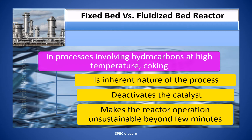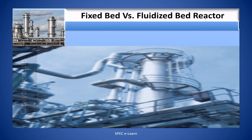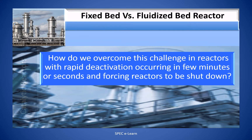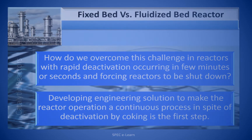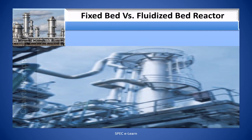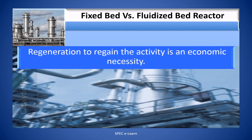When catalyst activity is reduced by deactivation below a certain value, conversion drops below an economically acceptable value and selectivity also drops below the acceptable level. The reactor operation becomes unsustainable and you have to shut down the reactor. Developing engineering solutions to make reactor operation a continuous process in spite of deactivation by coking is the first step. Regeneration to regain the activity is an economic necessity.